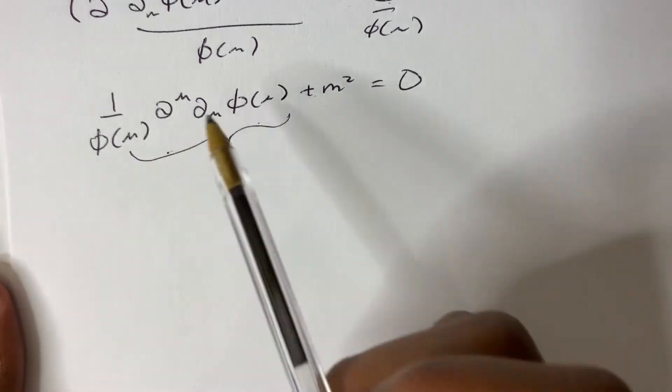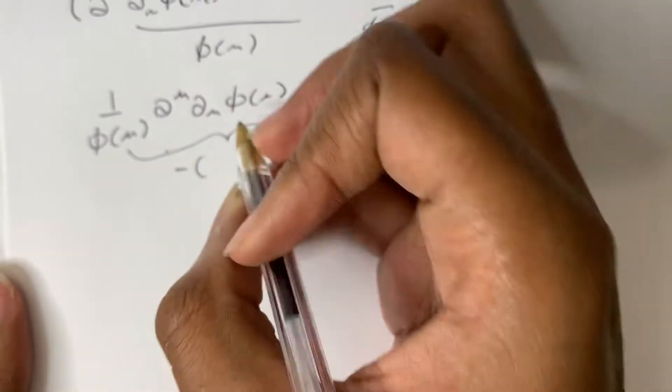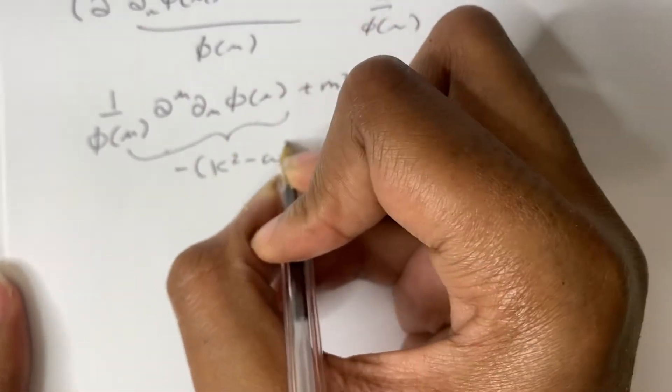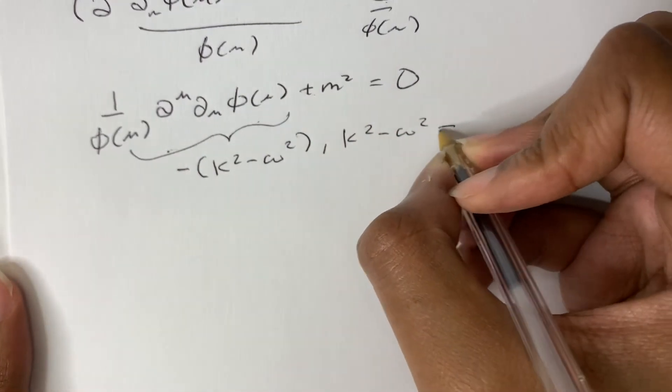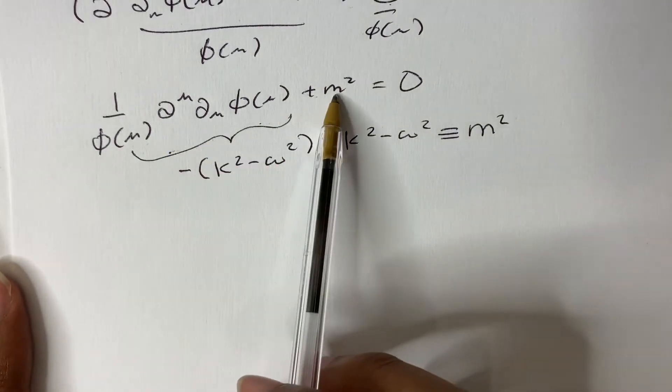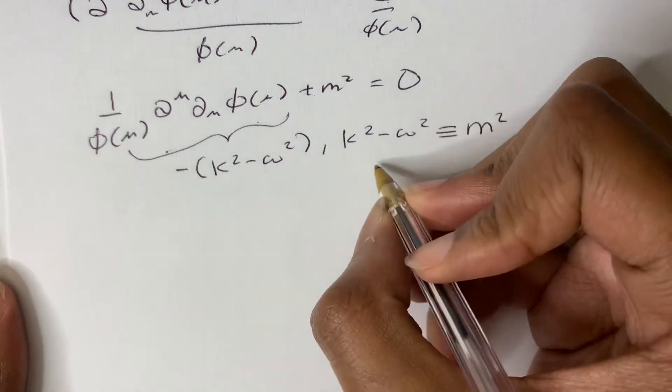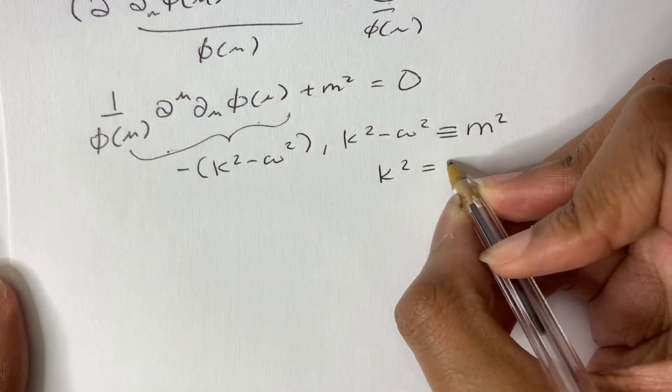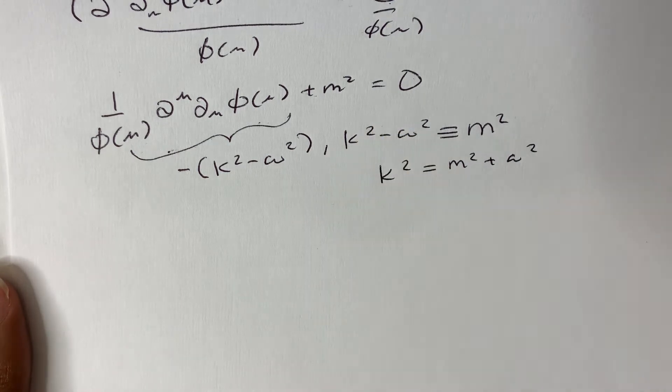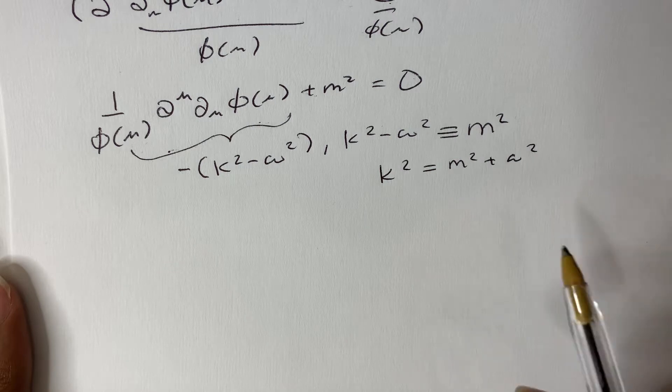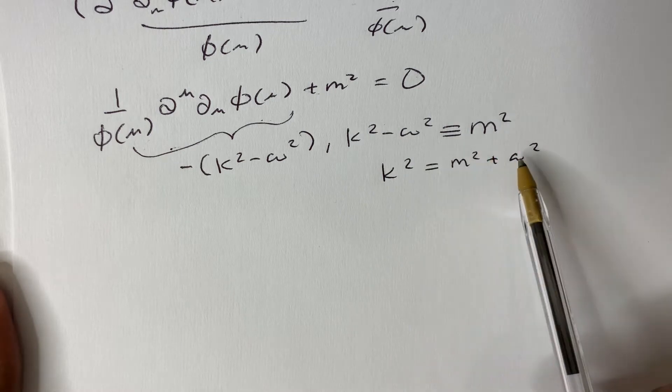So what we can do is we can define this as being minus k squared minus omega squared, where these are constants, and k squared minus omega squared is defined as m squared. Therefore, we'd have minus m squared plus m squared yielding 0. Now, since k squared minus omega squared equals m squared, this means that k squared equals m squared plus omega squared. Now, k squared and m squared, they're just constants, and they have physical significance that we will comment on in future videos.